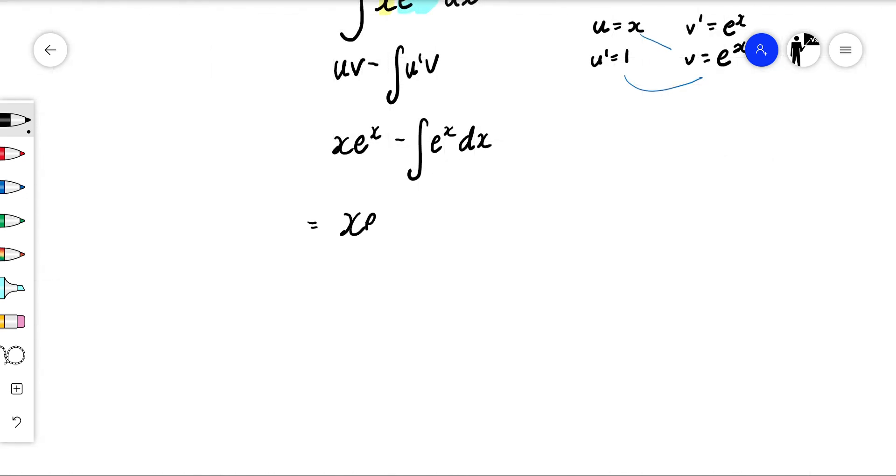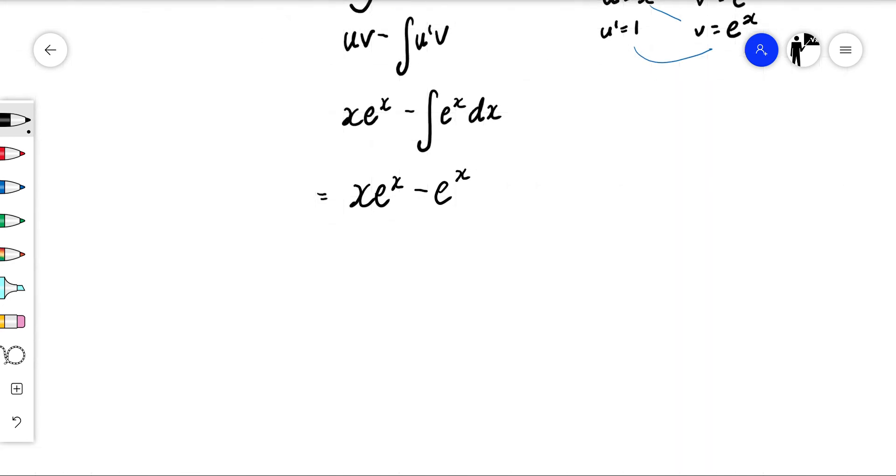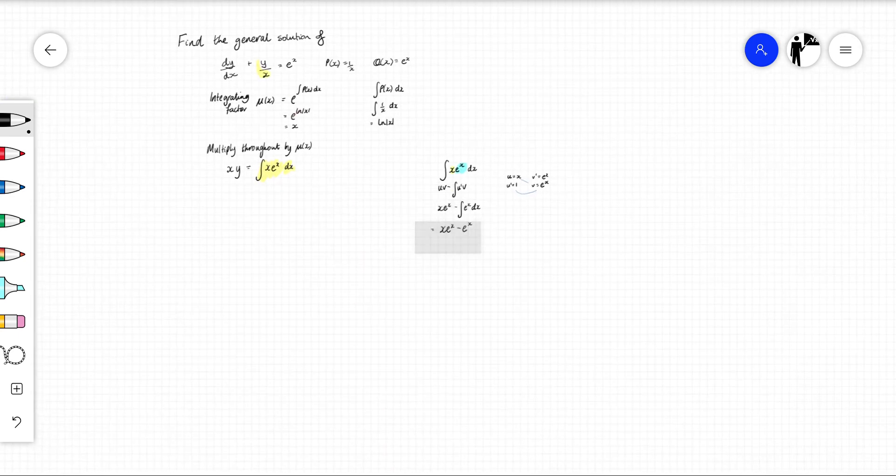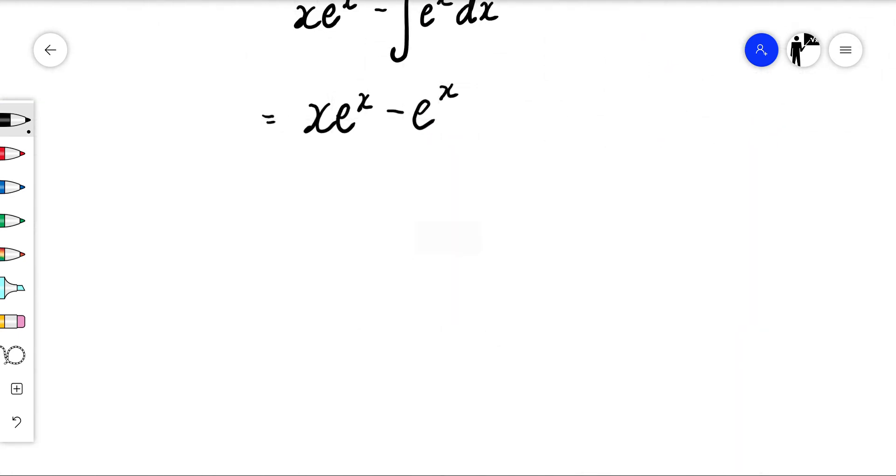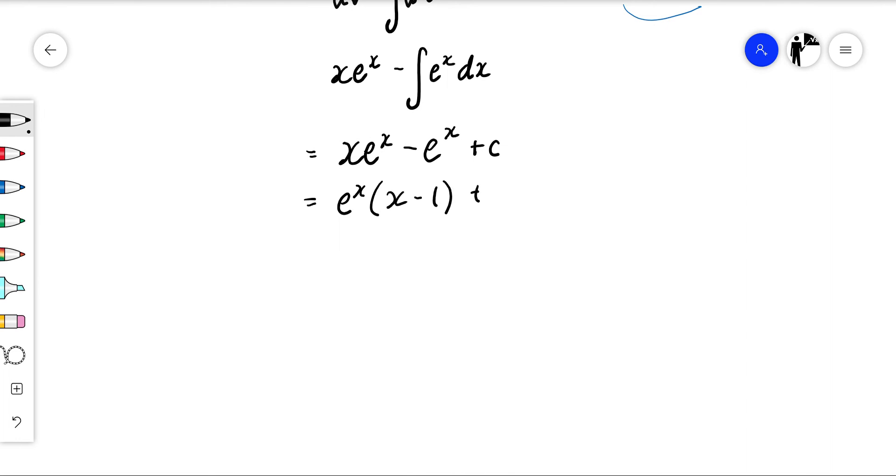which when we work through it's going to become x e to the x minus e to the x and we'll put a plus c here. I'm just going to take a common factor here of e to the x as well: x minus 1 plus c.